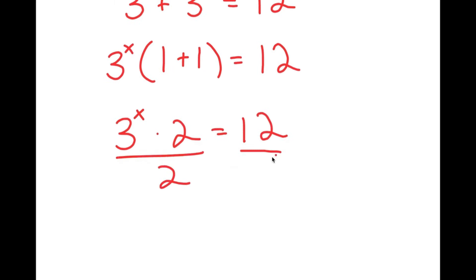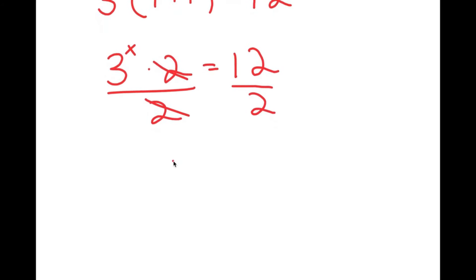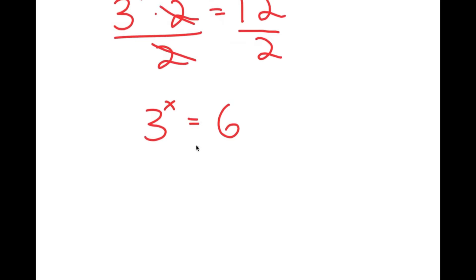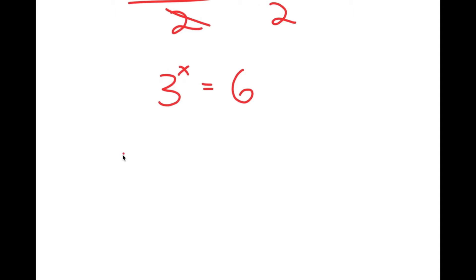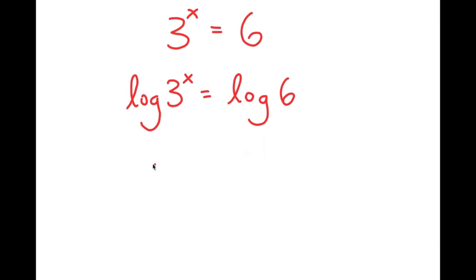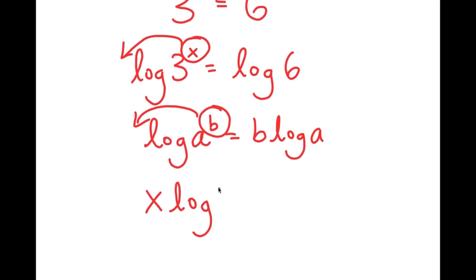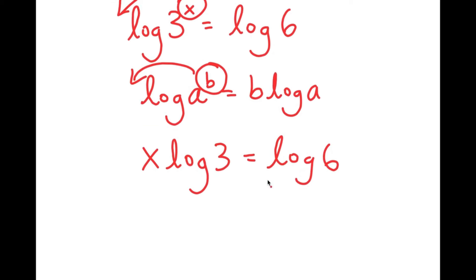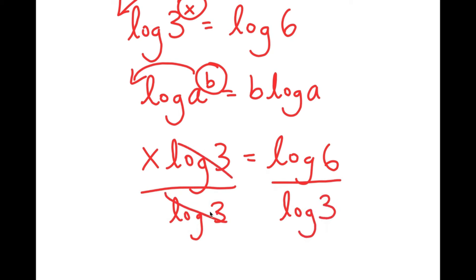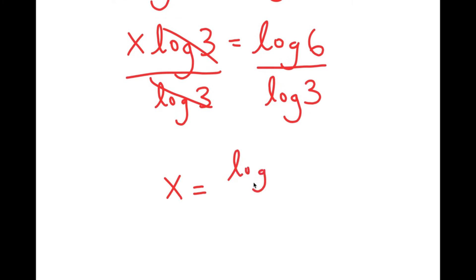Now I can divide both sides by 2, so these two cancel out, and I get 3 to the power of x is equal to 6. From here, what I'm going to do is take the log on both sides, so I get log 3 to the power of x is equal to log 6. And if I have something in the form log a to the power of b, I can move the exponent to the front, so this turns into b times log a. In this case I have log 3 to the power of x, so I can move x to the front: x times log 3 is equal to log 6. Now I can divide both sides by log 3, so these cancel out and I get x is equal to log 6 over log 3.